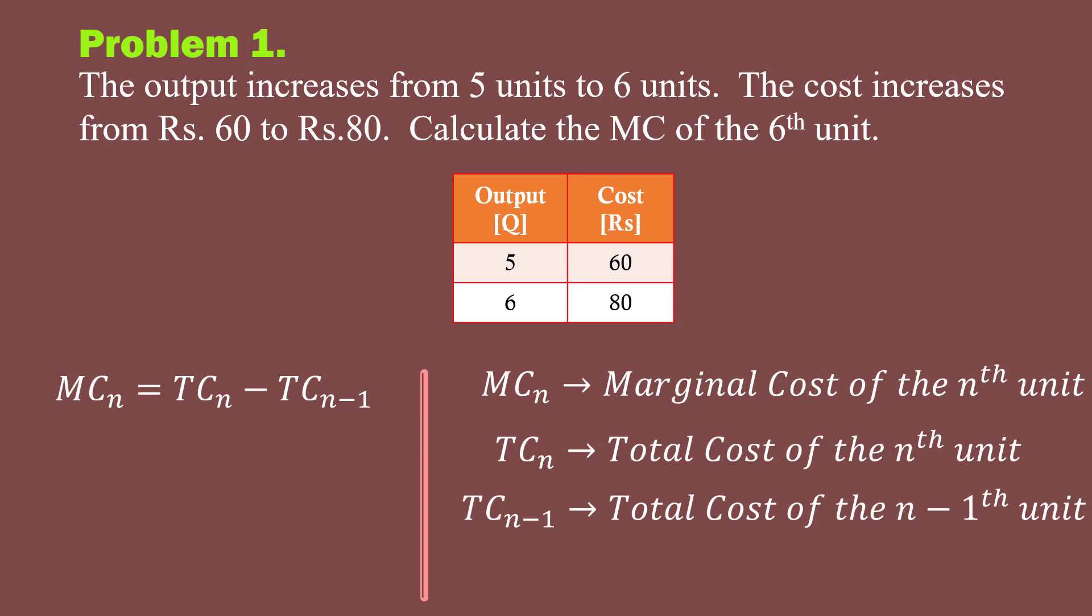We shall rewrite the formula that will serve our purpose. Marginal cost of the 6th unit equals TC of the 6th unit minus TC of the 5th unit. Substitute the values: Total cost of the 6th unit is 80, total cost of the 5th unit is 60. Marginal cost of the 6th unit equals 80 minus 60, which is 20.